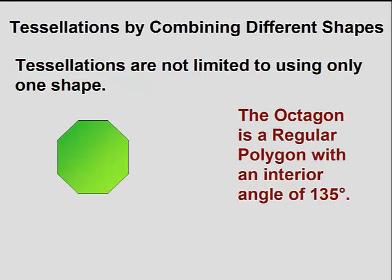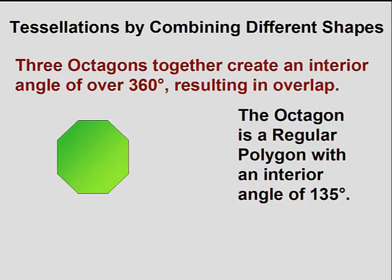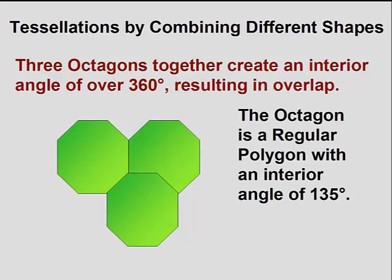Tessellations are not limited to using only a single shape. We'll demonstrate this by using our octagon. An octagon is a regular polygon with 8 sides and 8 interior angles. The interior angles measure 135 degrees. So if we try to tessellate an octagon by itself without creating any gaps or overlaps, we will have trouble, because 3 octagons put together result in an overlap.